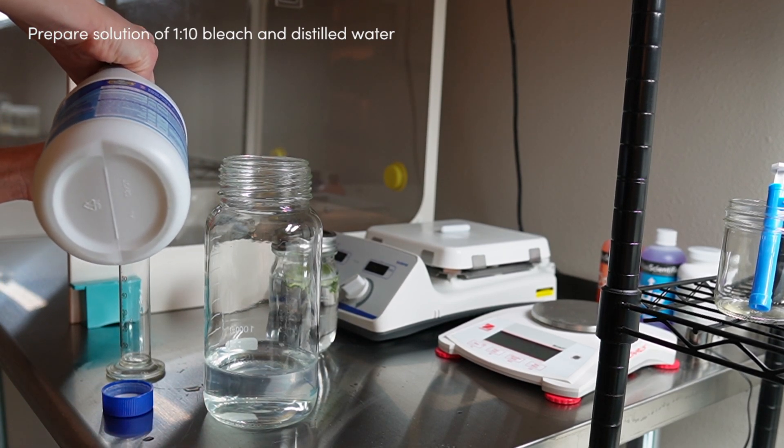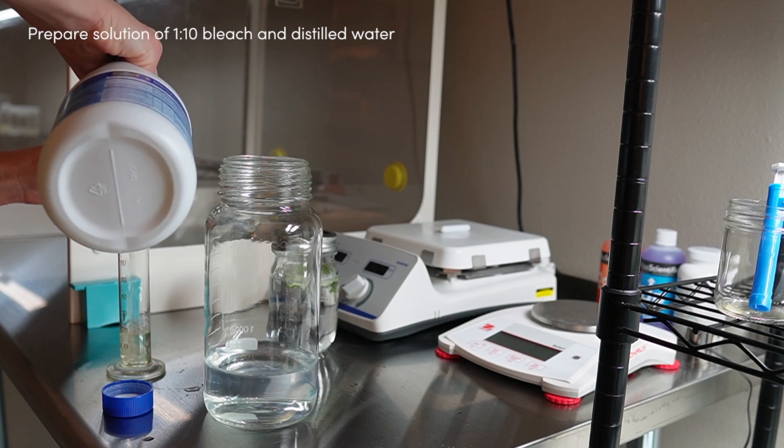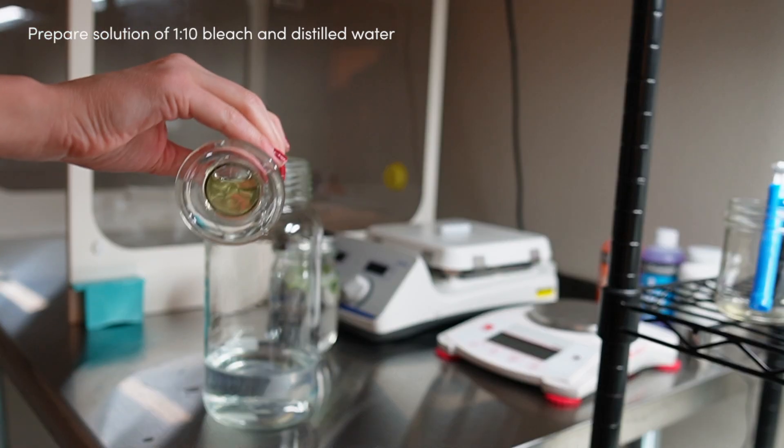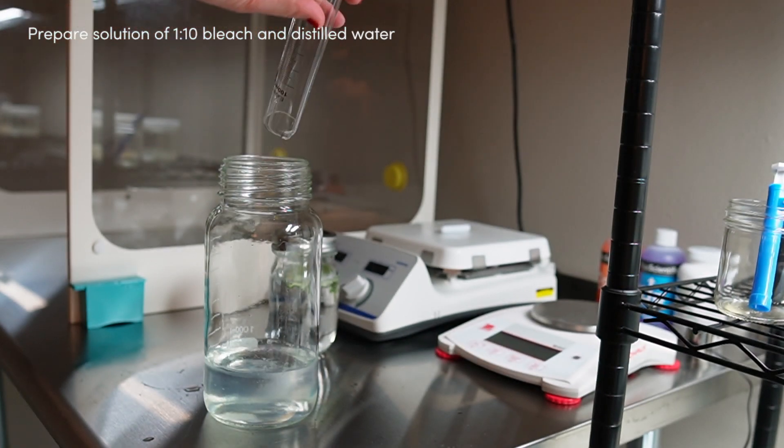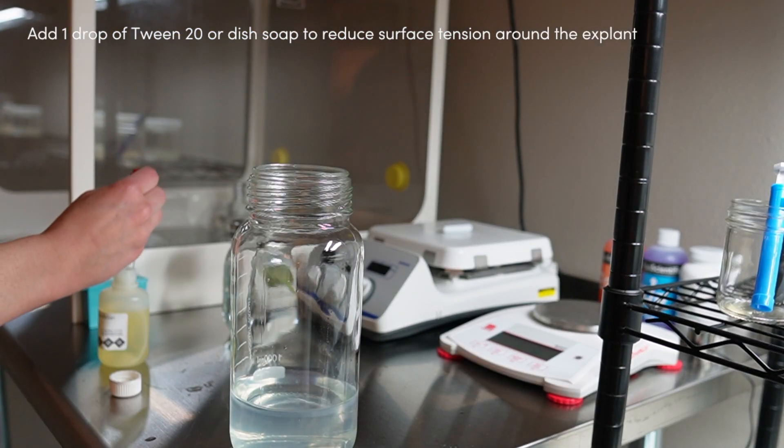The first step in establishment is to clean the part of the plant that you're planning to use for tissue culture. Now the way that you clean the plant and also the part of the plant that you decide to use for tissue culture will depend on the protocol that you're following.